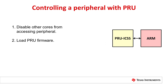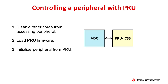Next, you need to load firmware into the PRU's instruction RAM, or IRAM. Texas Instruments Linux and RTOS operating systems both have tools that allow the ARM to initialize the PRU. Then, the PRU must initialize the peripheral, since the other cores think that the peripheral is not being used. First, the PRU must make sure that the clock sources for the peripheral are turned on. Then, the PRU can set the required registers within the peripheral to initialize it. At this point, the PRU is ready to control the peripheral however your system needs it to.